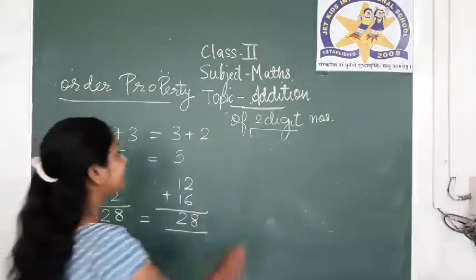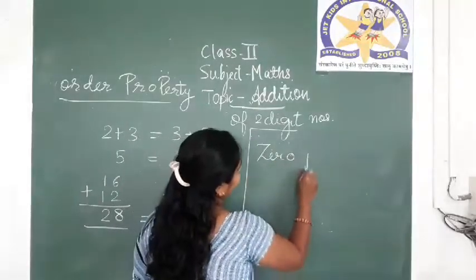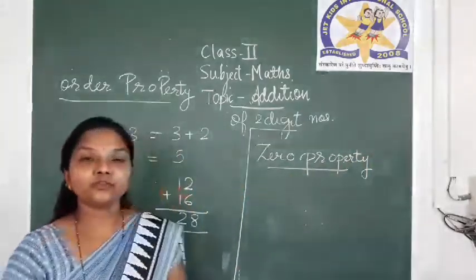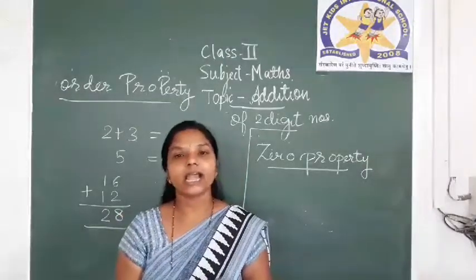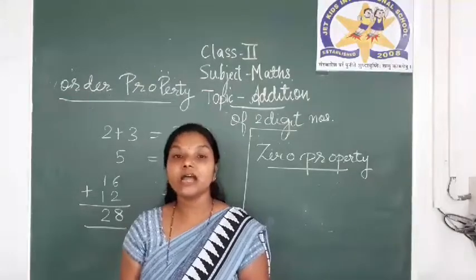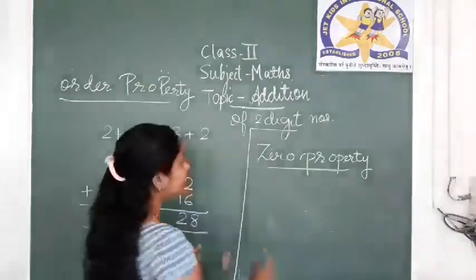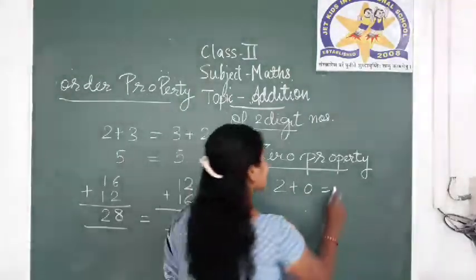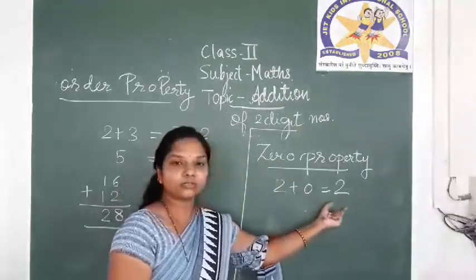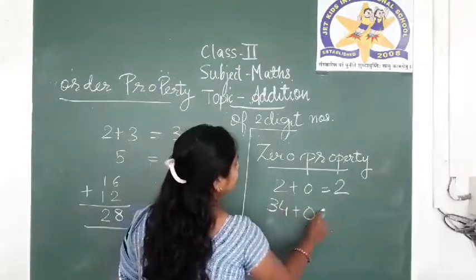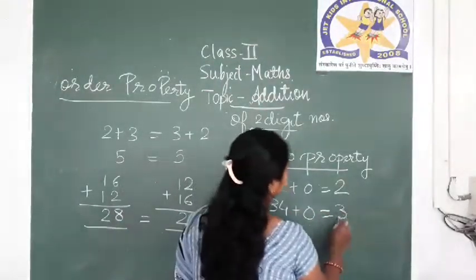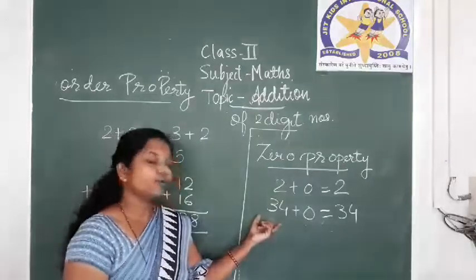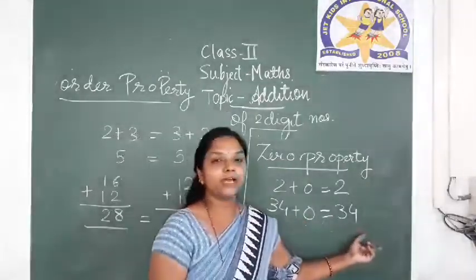The second property is the zero property of addition. Zero property means: if you add 0 to any number, your answer will always be the number itself. For example, if I am adding 2 plus 0, that means I am adding nothing to 2, so 2 will remain as it is — 2 plus 0 is 2. If I am adding 34 plus 0, it will be 34. This is the zero property of addition.